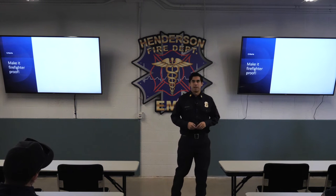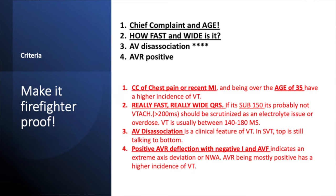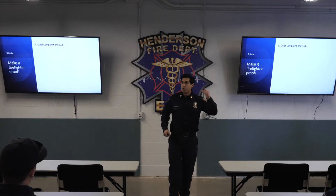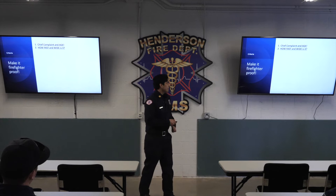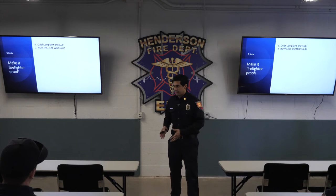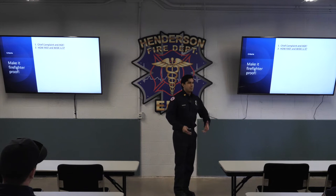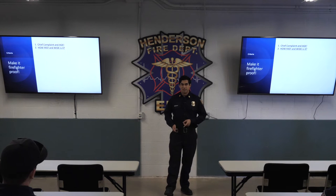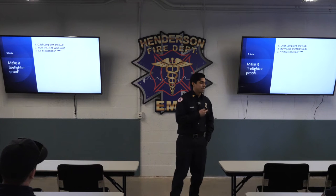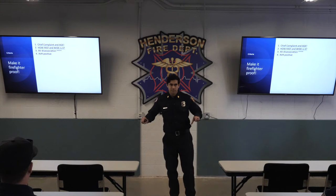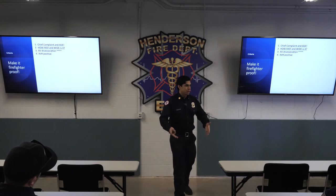We use a firefighter-proof approach. Step one: chief complaint and age — we already ask this. Every study I pulled from said this was your biggest indicator. If the patient was experiencing a cardiac complaint and was over age 35, their incidence of having true VTAC was so much higher — almost in the 90th percentile. Step two: how fast and wide is it really? We'll talk about the inverse relationship. Step three: AV dissociation. Step four: AVR being positive. We should have 98% of our plan from that four-lead strip that drives our arrhythmia diagnosis.